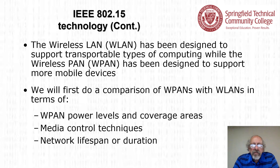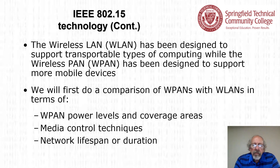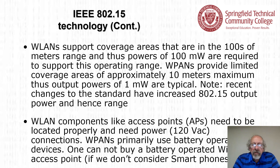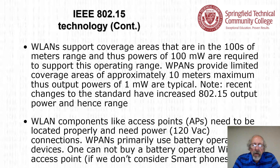Comparing wireless LANs to wireless PANs: the WLAN has been designed to support transportable types of computing, while a WPAN has been designed to support more mobile devices. Wireless LANs support coverage areas in the hundreds of meters range, requiring powers of 100 milliwatts. Wireless PANs provide limited coverage areas of approximately 10 meters maximum, with output powers of 1 milliwatt typical — though recent changes to the standard have increased 802.15 output power and hence range. Wireless LAN access points need 120 volts AC connections, while wireless PANs primarily use battery-operated devices.